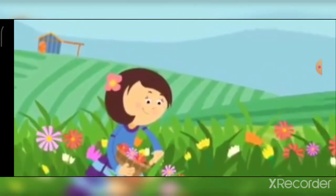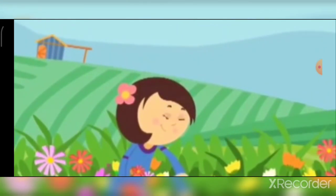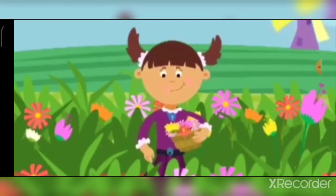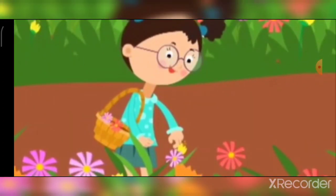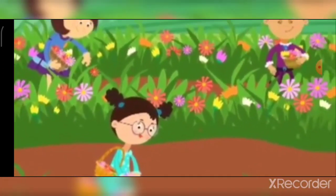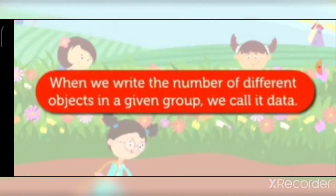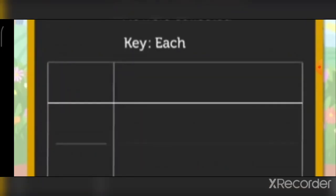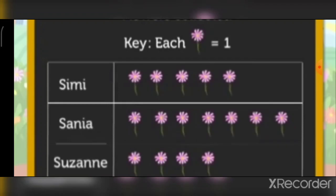Look at the flower farm. Simi collected 5 flowers, Sania collected 7 flowers, and Suzanne collected 4 flowers from the farm. When we write the number of different objects in a given group, we call it data. The data given in the flower farm example can also be represented by drawing pictures — this is called a pictograph.